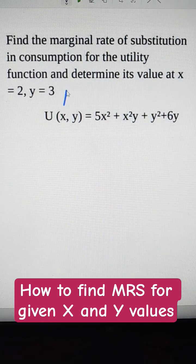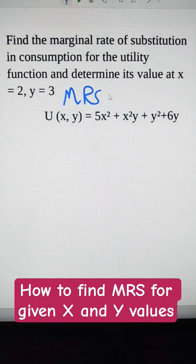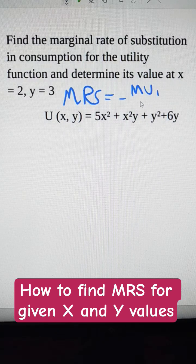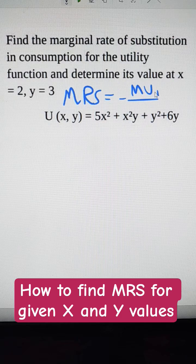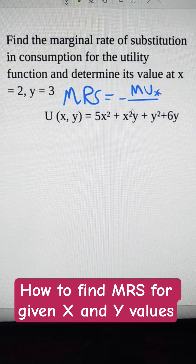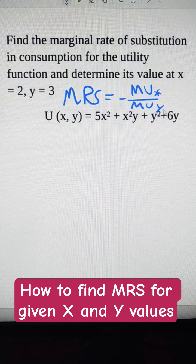The marginal rate of substitution's formula is negative marginal utility of the first product, or in this case we'll say x, over the marginal utility of the other product, which is y.